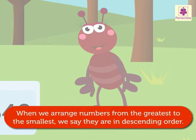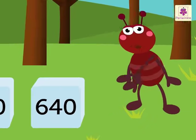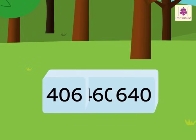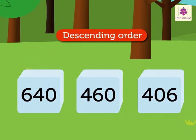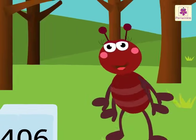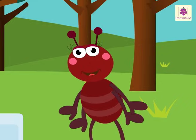When we arrange numbers from the greatest to the smallest, we say they are in descending order. So these sugar cubes in descending order will be arranged as 640, 460, 406.